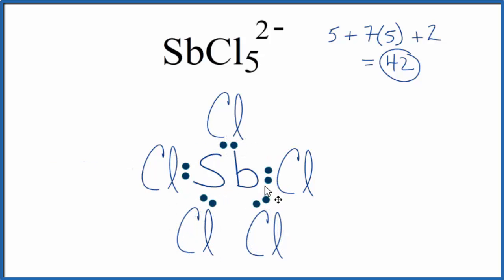So at this point, Sb has 10, that's okay, it can have an expanded octet. Then we'll complete the octets on these chlorine atoms here.